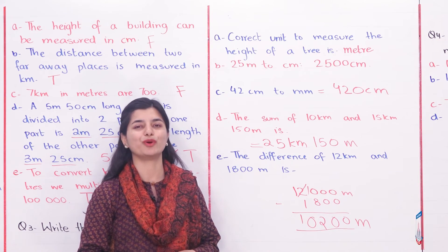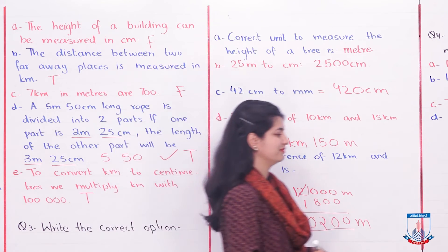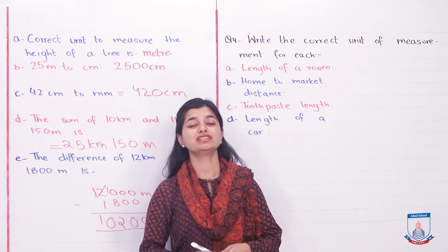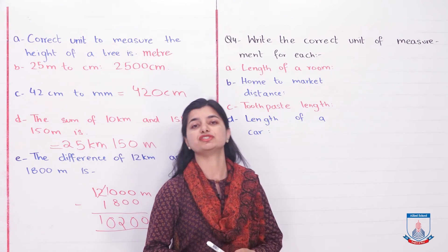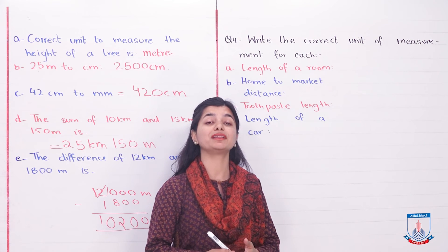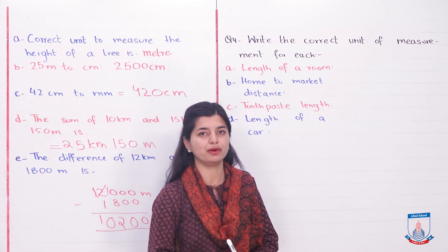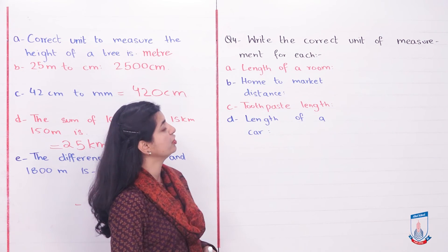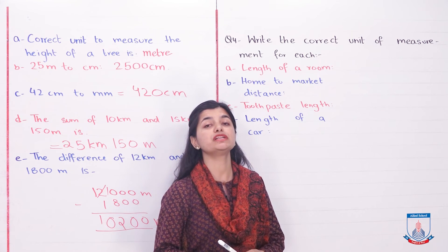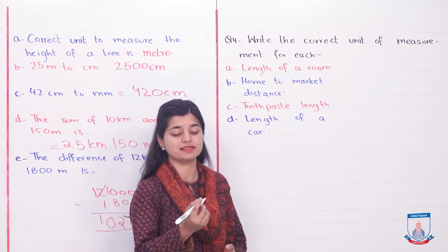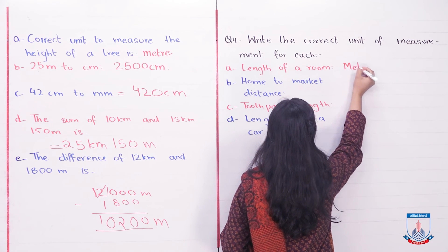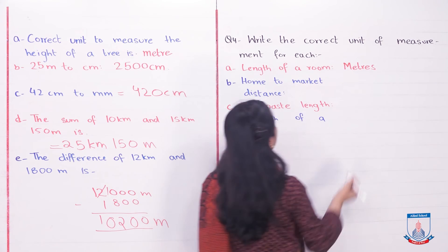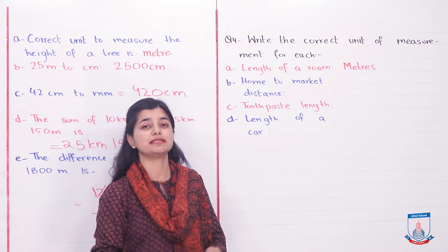Question number 4: Write the correct unit of measurement for each. Part A: length of a room. We can measure a room in meters. Part B: home to market distance. You can measure the distance from a house to market in kilometers.